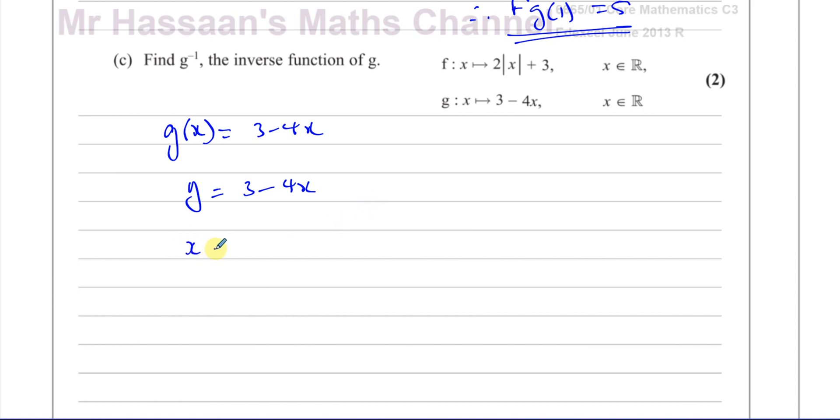Second step is, wherever you see x, you call it y. Wherever you see y, you call it x. So x equals 3 minus 4y. And now we're going to make this y the subject. So we're going to add 4y to both sides, subtract x from both sides, and then divide both sides by 4. So we can say that inverse of g of x is equal to 3 minus x divided by 4.